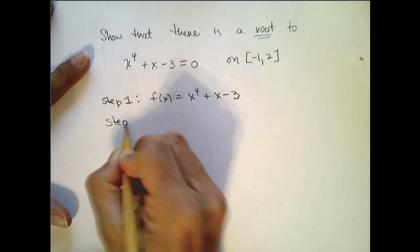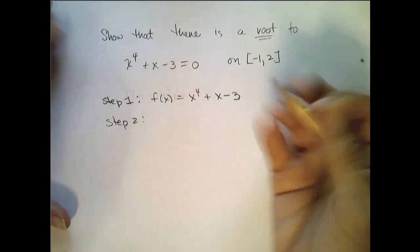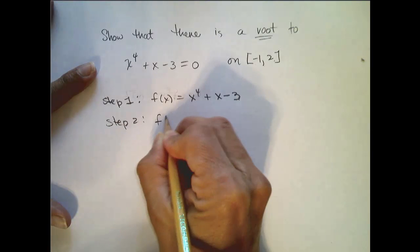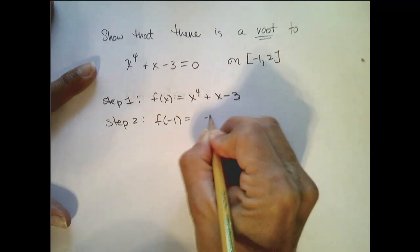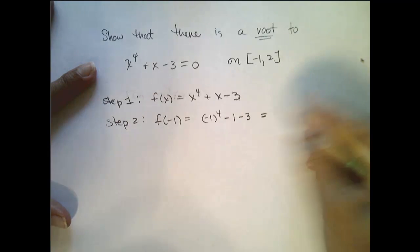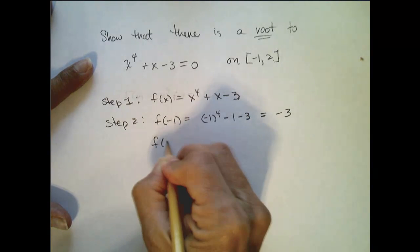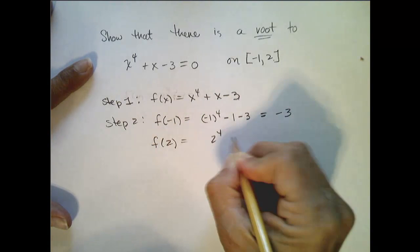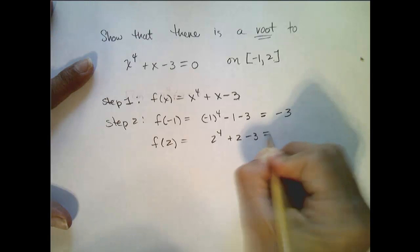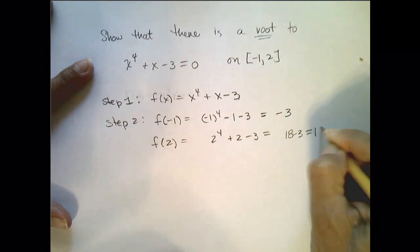So step 2, I'm going to evaluate my function at these endpoints just to see if it tells me anything interesting. So f of negative 1 equals negative 1 to the fourth minus 1 minus 3, which is negative 3. f of 2 is 2 to the fourth plus 2 minus 3, which is 16 plus 2 or 18 minus 3, which is 15.